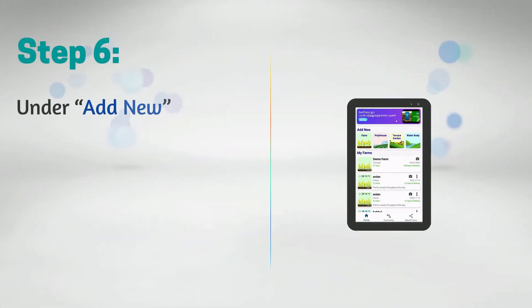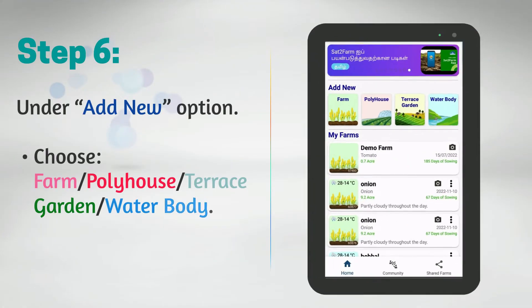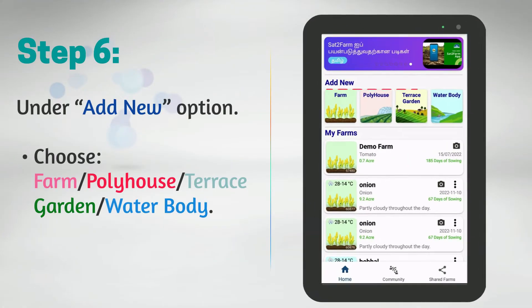Step 6: On the home screen, you can see the 'Add New' option. Under this, choose any of the provided options.